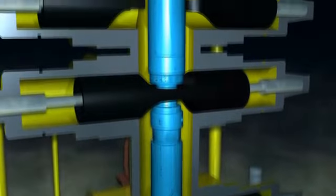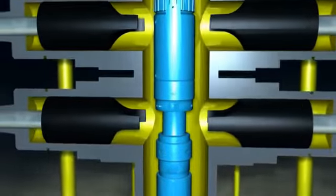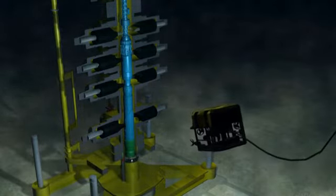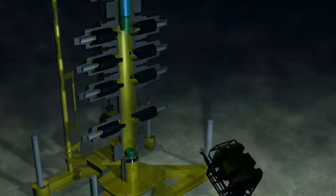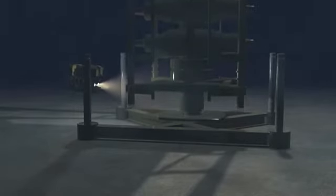Now that the well has been suspended, the BOP pipe rams are opened from around the integral slick joint. The tubing hanger running tool is then unlatched from the tubing hanger and the full landing string is retrieved to surface. The BOP connector is then unlocked from the wellhead.